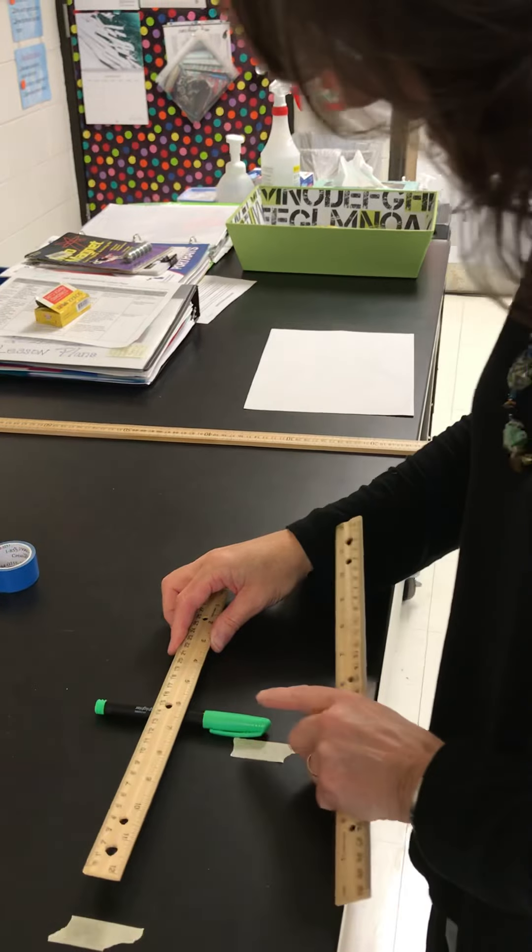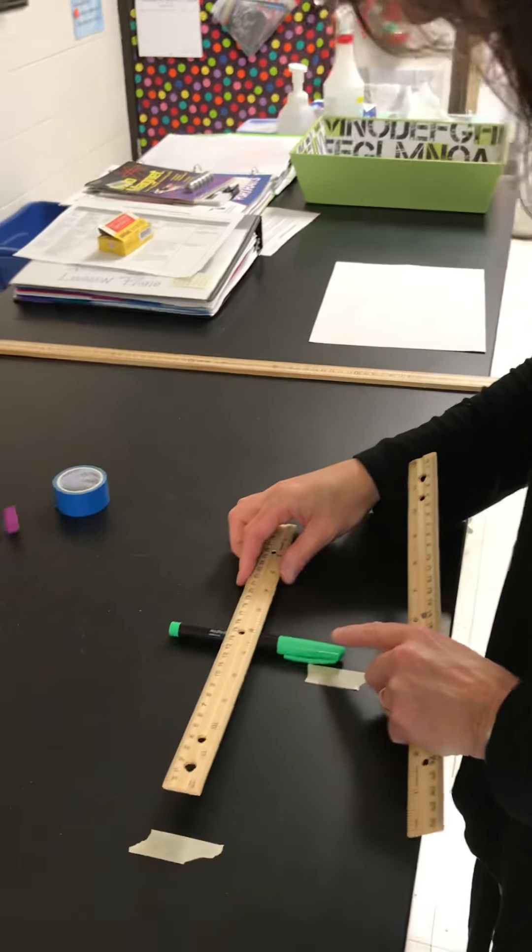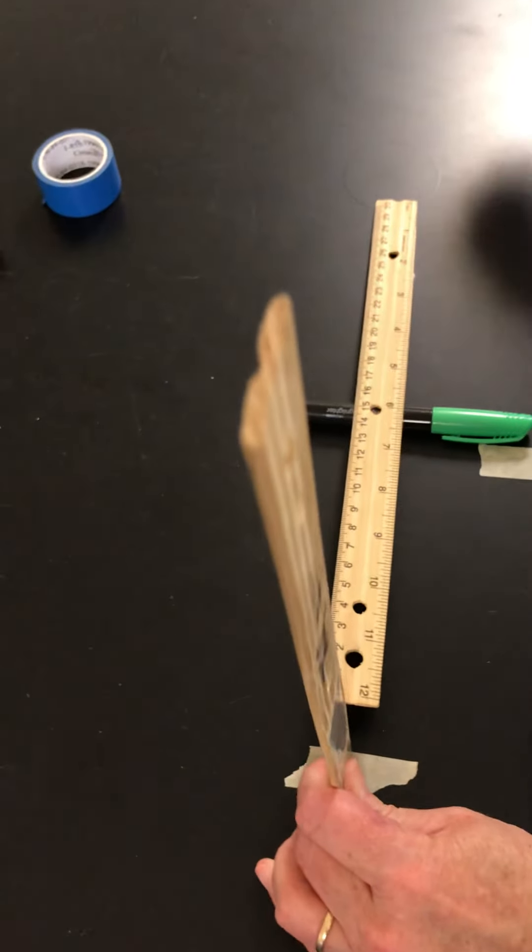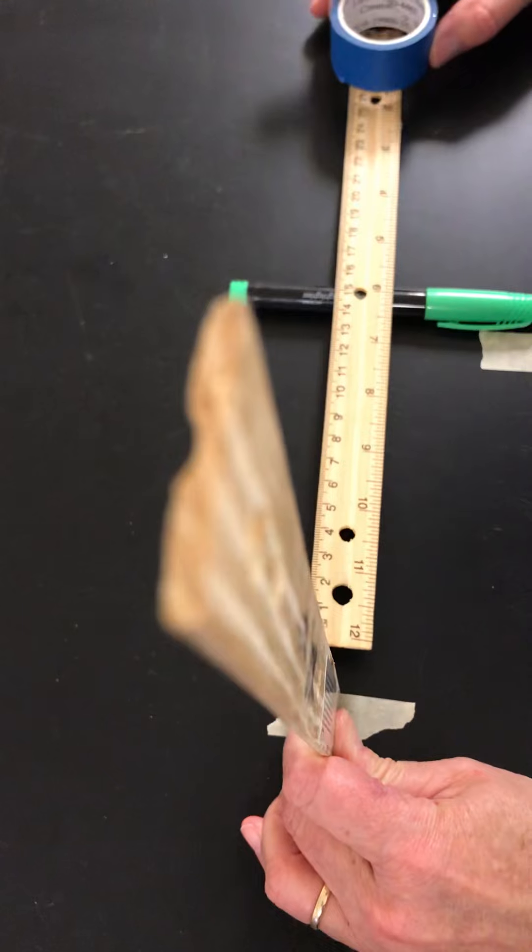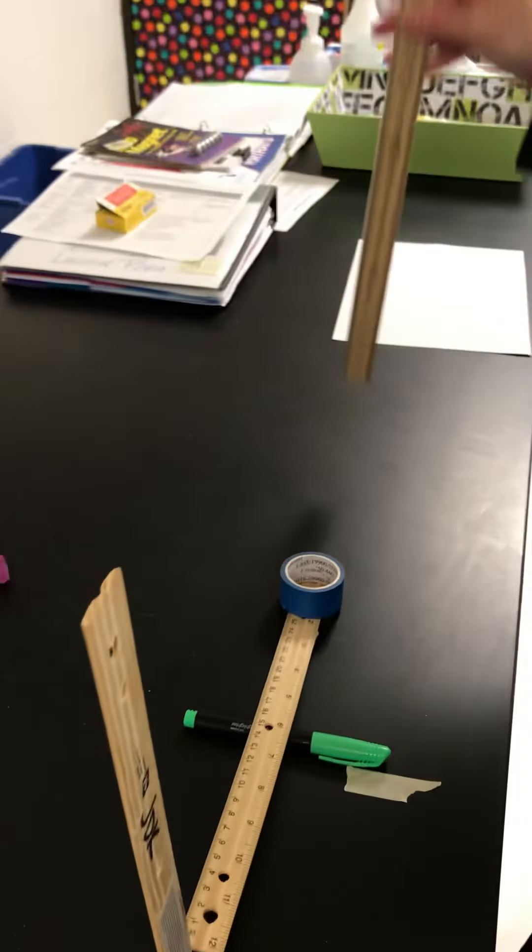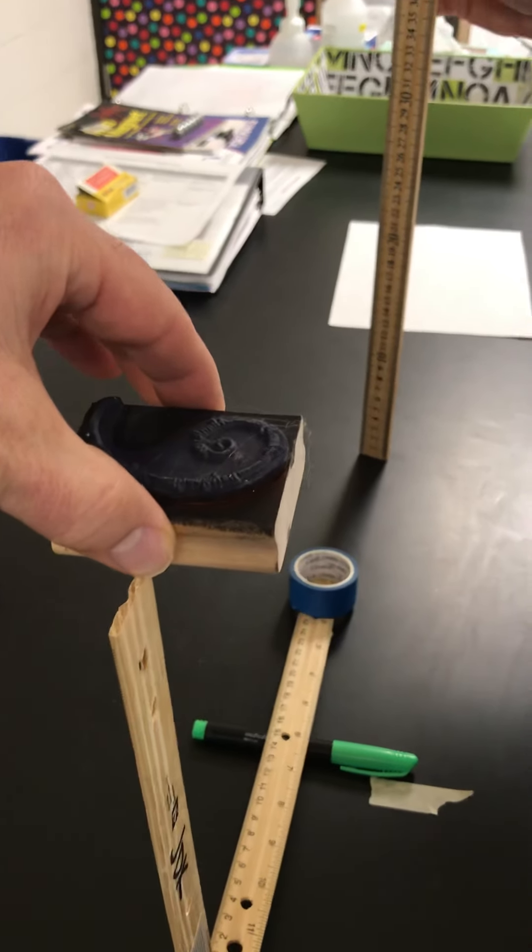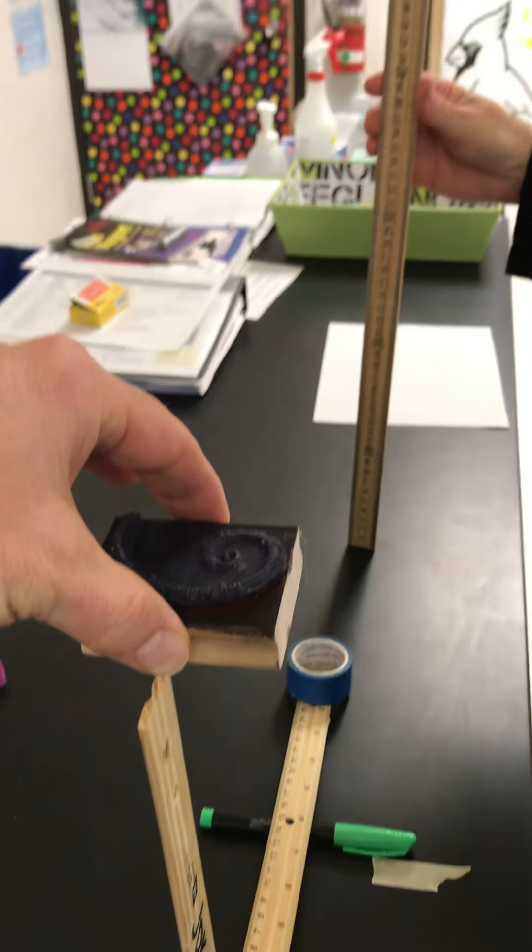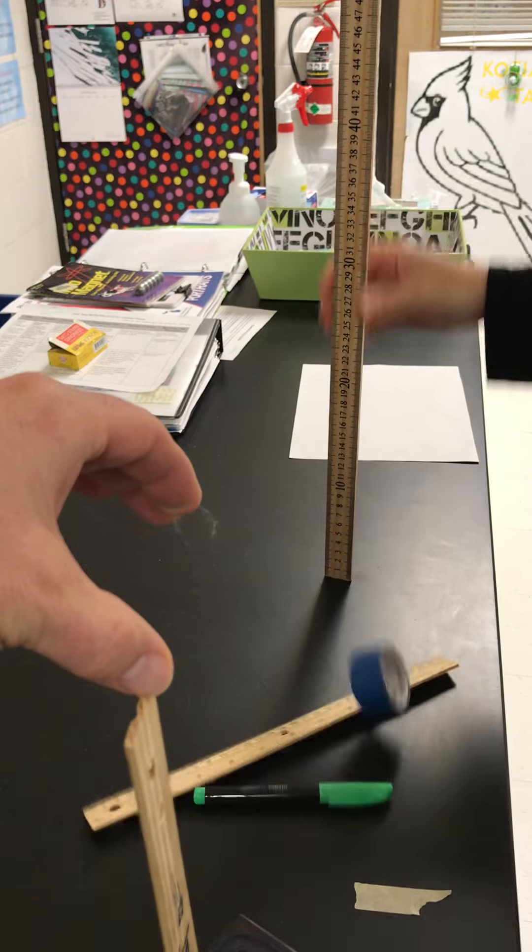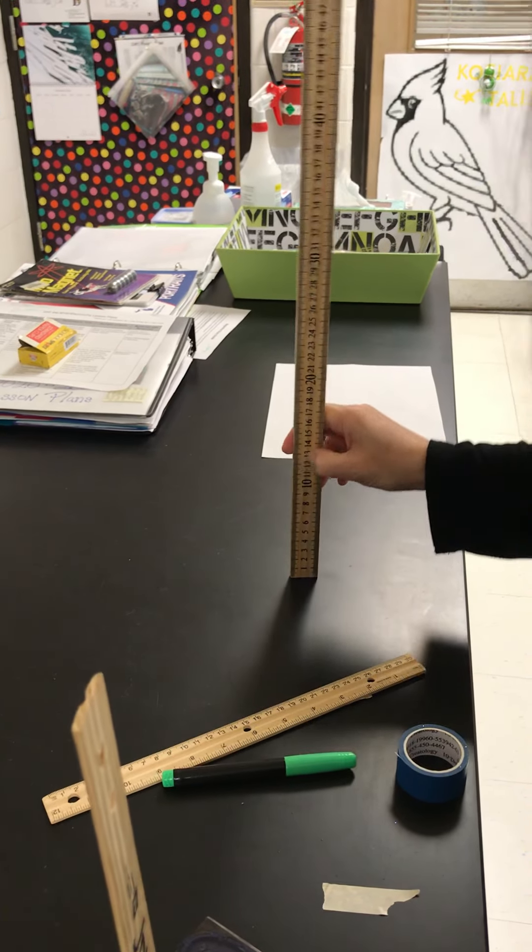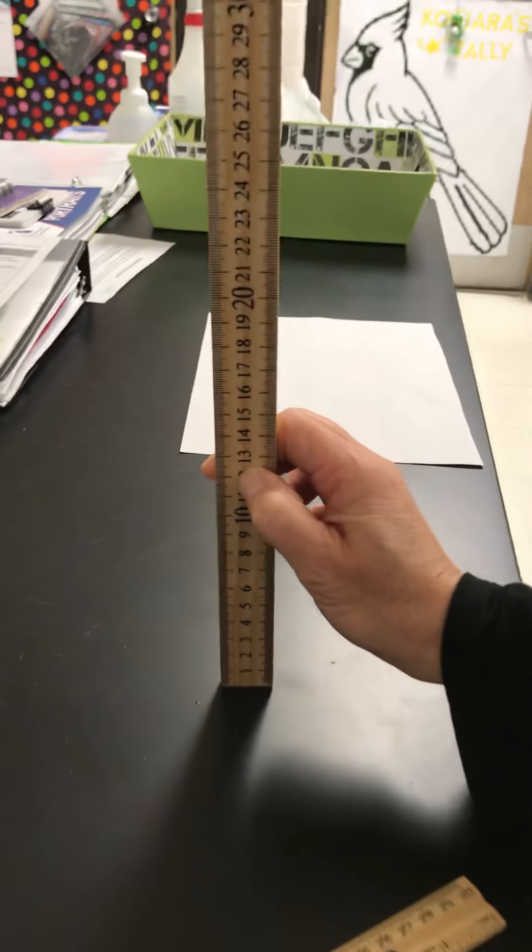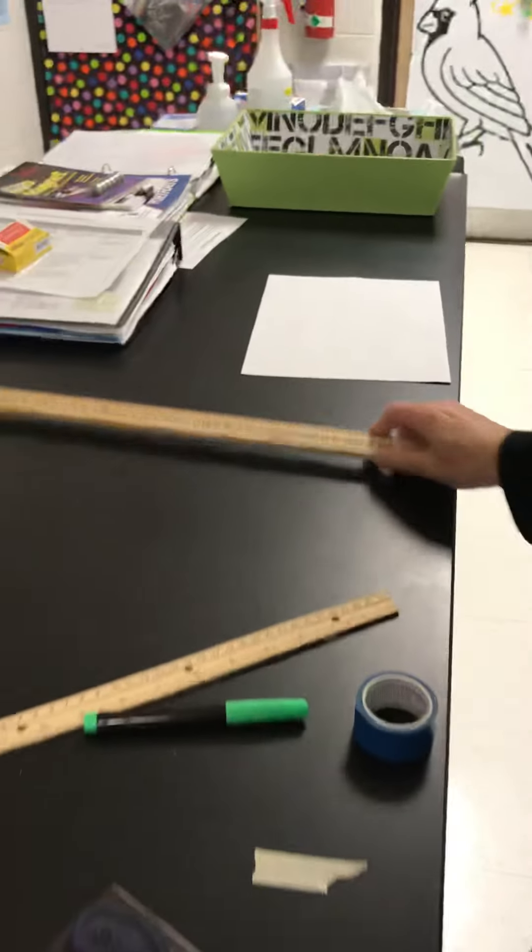Now for our next object. Again, our constants are the same - 15 centimeters, marker right there, same exact height. This time we'll use a roll of tape. Get our ruler for measurement. Drum roll please. Three, two, one. Oh, that wasn't very much at all. That was about 13 centimeters in height. Go ahead and jot that down.